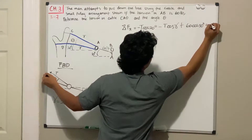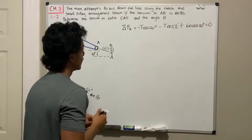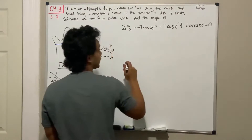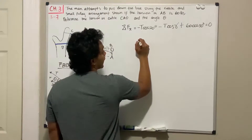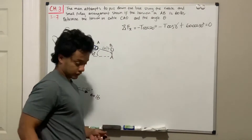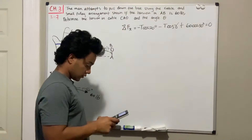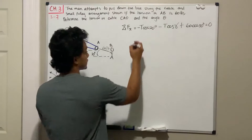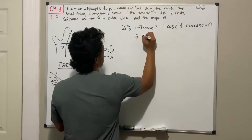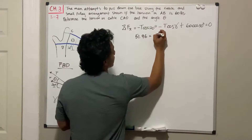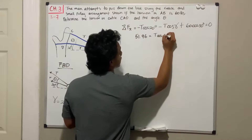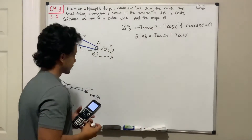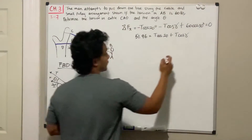Let's clean this equation up. We move the tensions to the other side. 60 cosine of 30 gives us 51.96. So our first equation is: 51.96 = T cosine of 20 + T cosine of gamma.